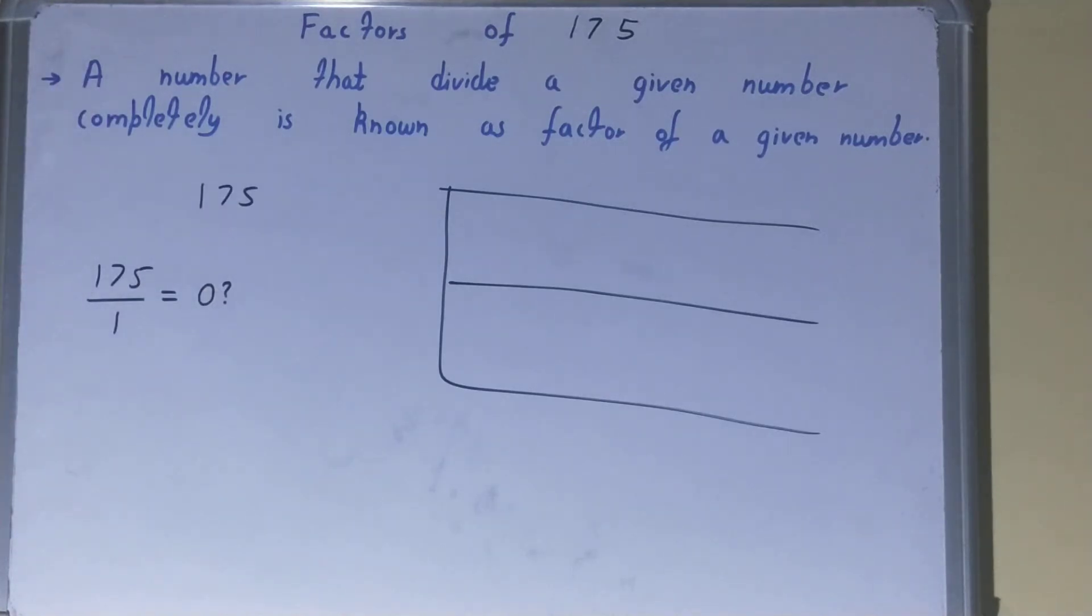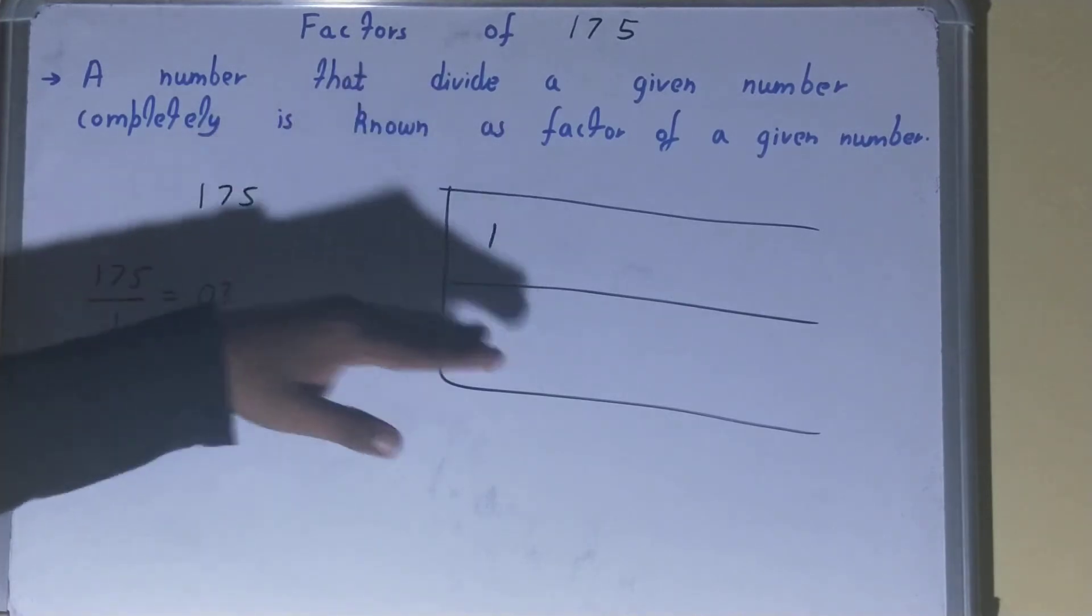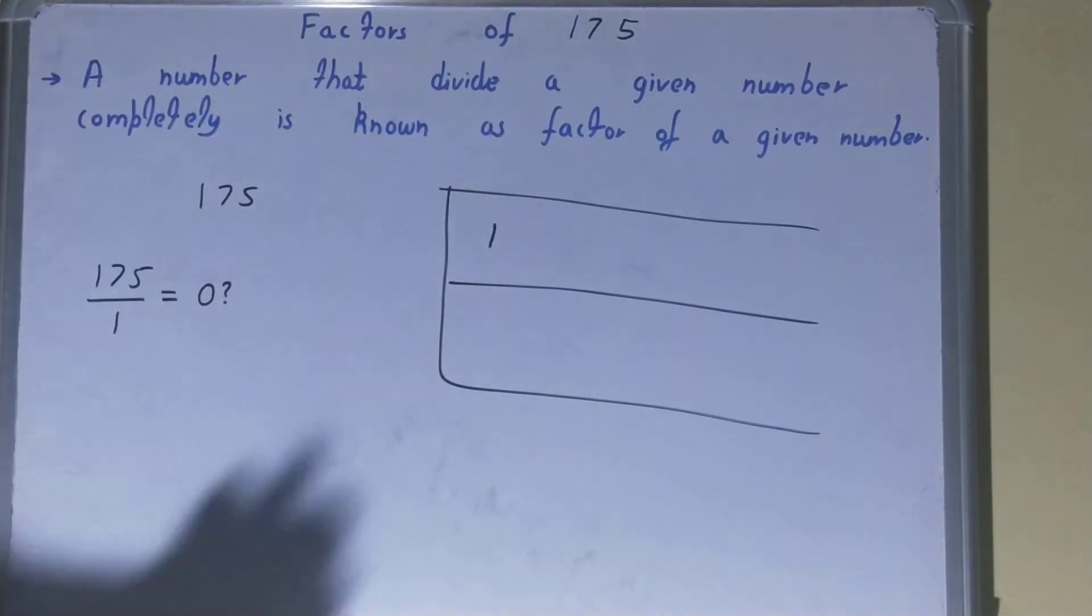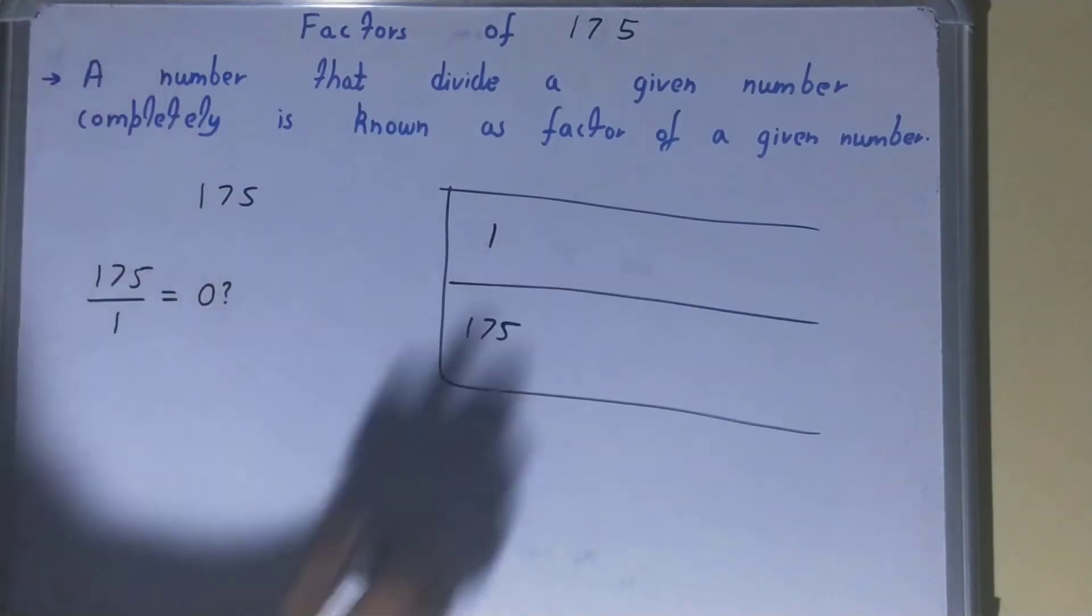So 1, I'll write it over here in the factor list. And with the help of this 1, we can find out another factor. How? 1 times what is 175? 1 times 175. So 175 will also be the factor automatically.